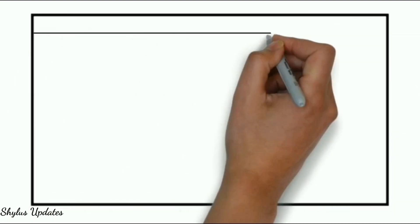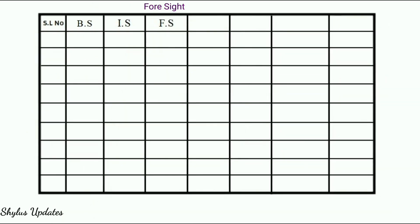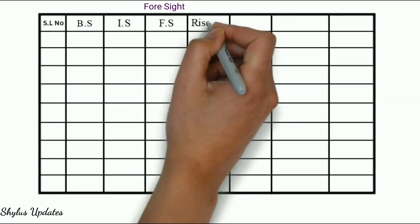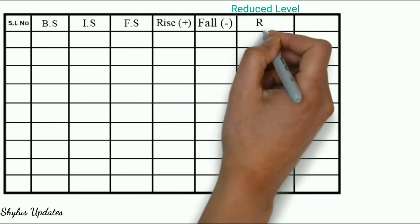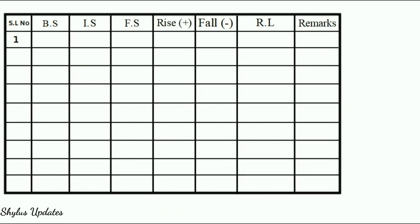First, draw a table like this and enter the readings. I will explain you how to enter readings in this table clearly. This column represents back sight BS, intermediate sight IS, foresight FS, rise, fall, reduced level RL and remarks. Let's start entering the readings in this table.